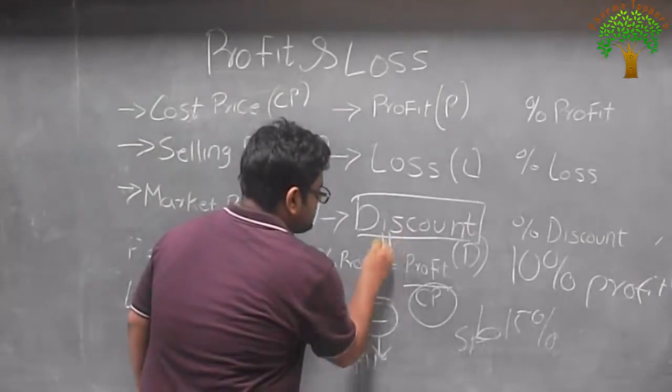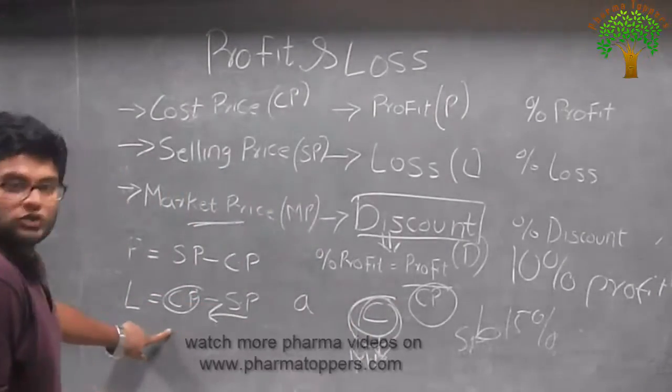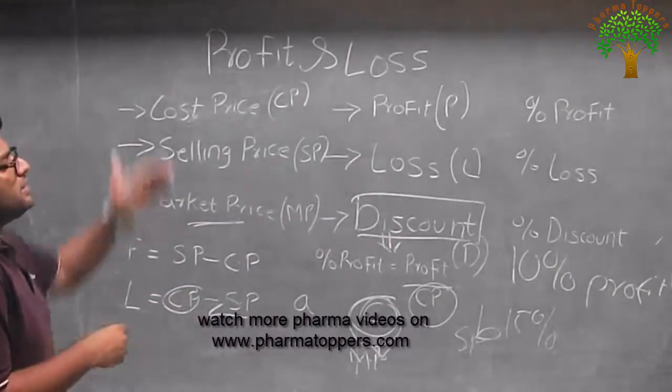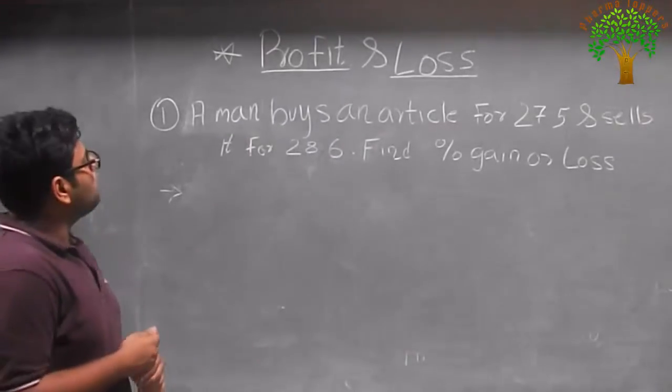Why, as I have already told, the discount, this discount would be on the market price and not on the cost price. So this is the basic difference between the profit and cost percentage and the discount price. Now let's move on to the first problem.